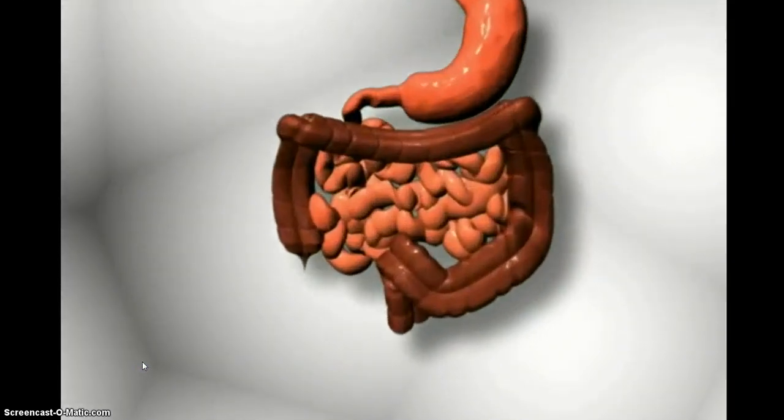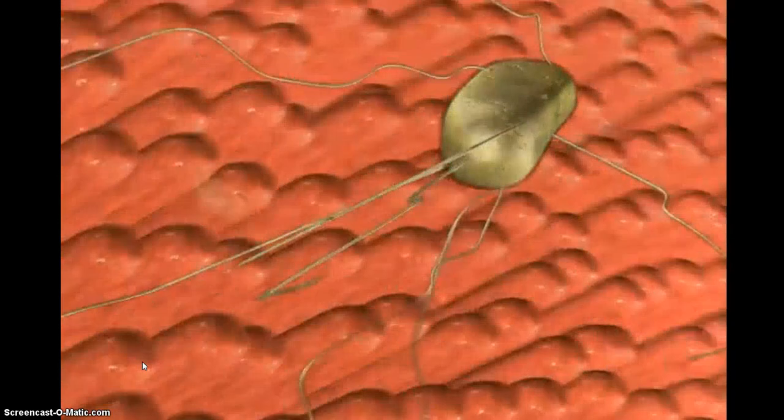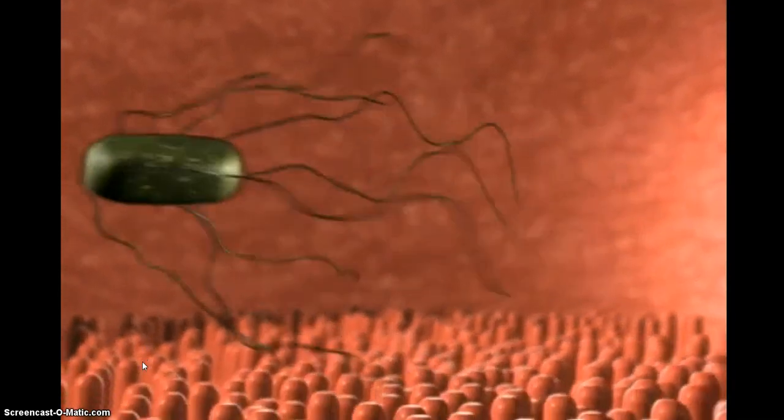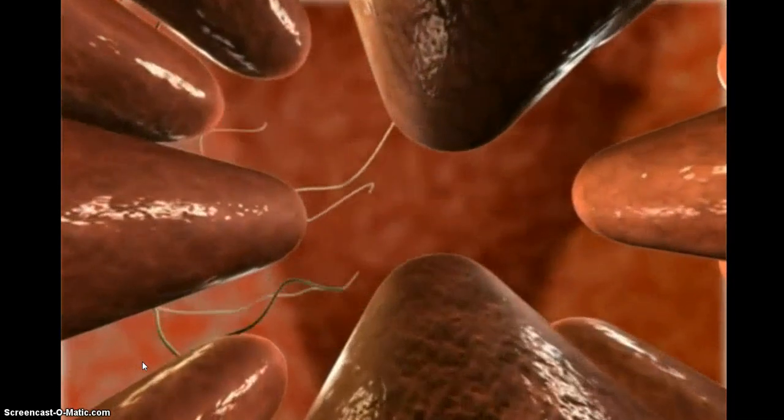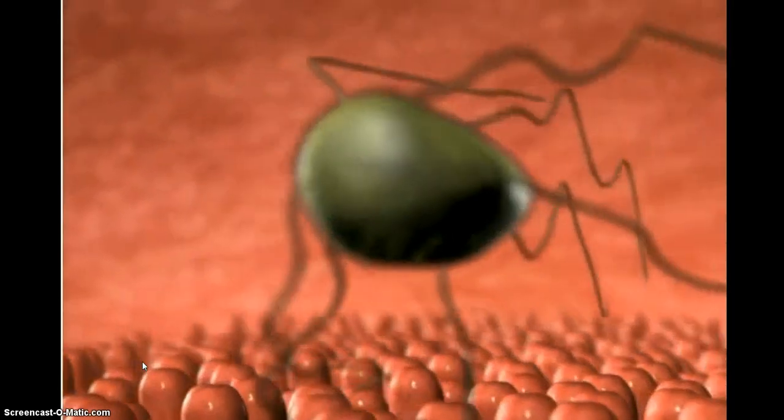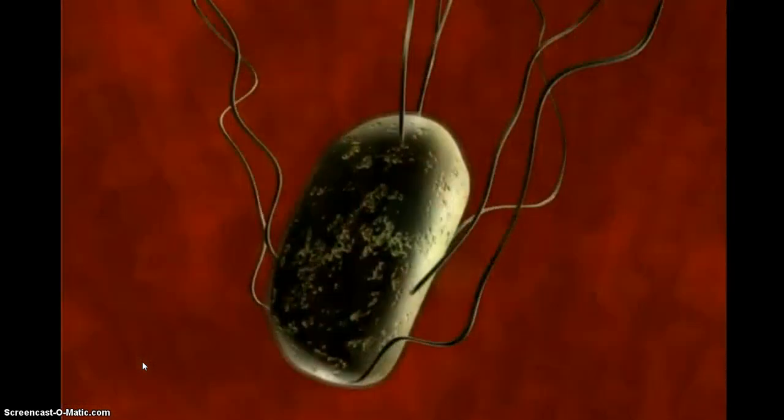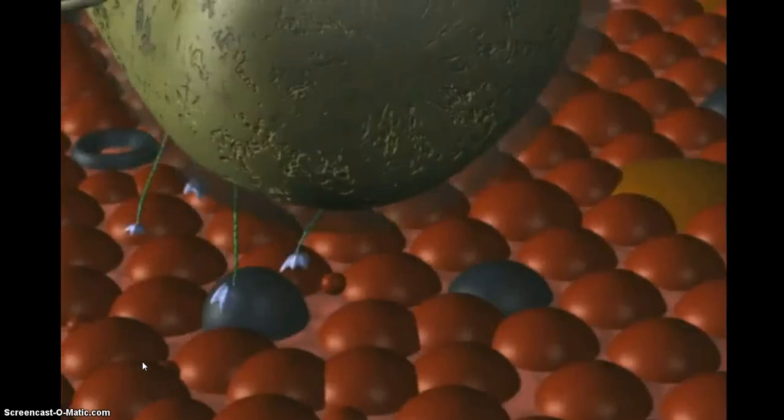Salmonella typhi enters the host system through the distal ileum. It has a specialized fimbria. With that fimbria, it adheres to the epithelium over clusters of lymphoid tissue in the ileum, also called Peyer's patches.